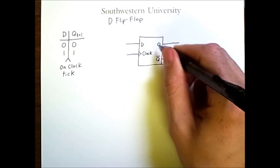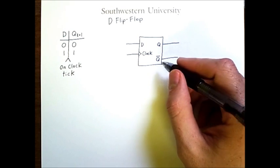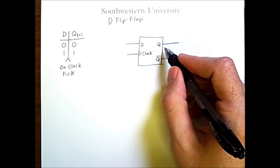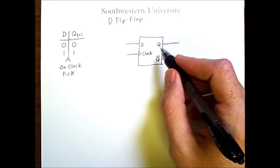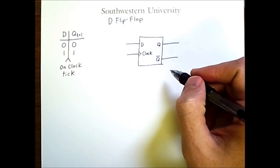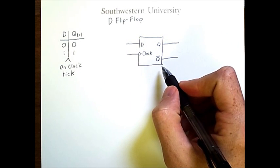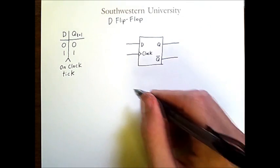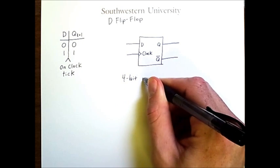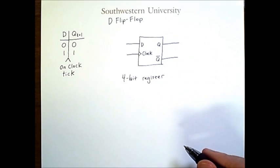Not-Q is needed internally for the circuit to remember the bit that it's storing. Note that D can also mean "delay" because the change in output is delayed until the clock tick occurs. One way to use a D flip-flop is to take several of them and combine them into a register. We'll be representing a 4-bit register using four of these D flip-flops.